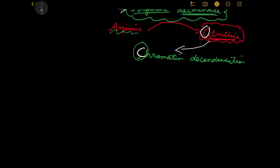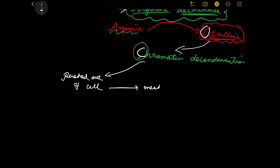Chromatin decondensation means that the chromatin is now loose as a fibrillary network. This decondensed chromatin is actually pushed out of the cell, and it forms a meshwork which will trap the microbes. So instead of one cell being able to punish perhaps 2 or 3 microbes, because of the formation of this extracellular trap, it will be able to deal with many more microbes.